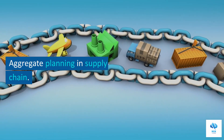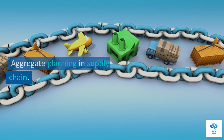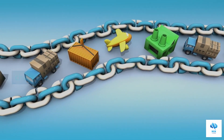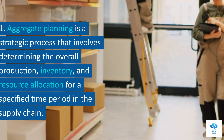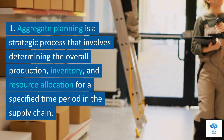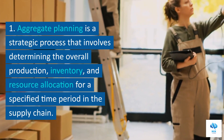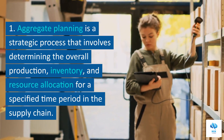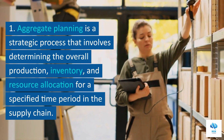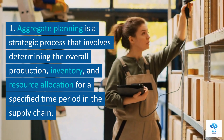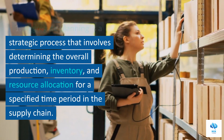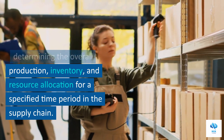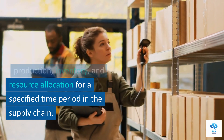Aggregate planning in supply chain. Aggregate planning is a strategic process that involves determining the overall production, inventory, and resource allocation for a specified time period in the supply chain.